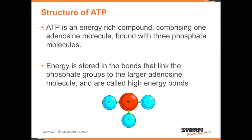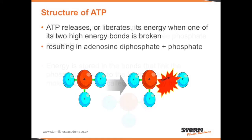The structure of ATP. ATP is an energy-rich compound comprising of one adenosine molecule bound with three phosphate molecules. Energy is stored in the bonds that link the phosphate groups to the larger adenosine molecule, and are called high energy bonds. ATP releases its energy when one of its two high energy bonds is broken, resulting in adenosine diphosphate plus phosphate — adenosine diphosphate is also known as ADP.